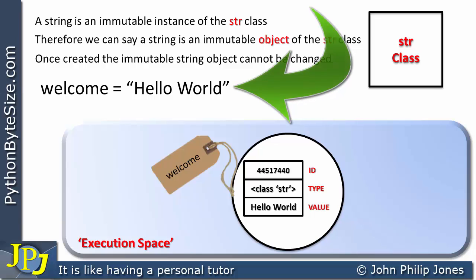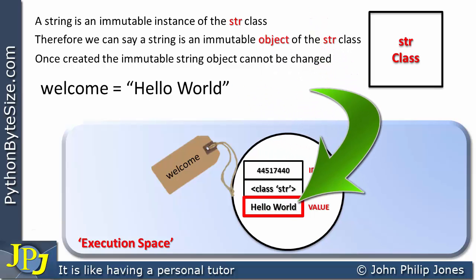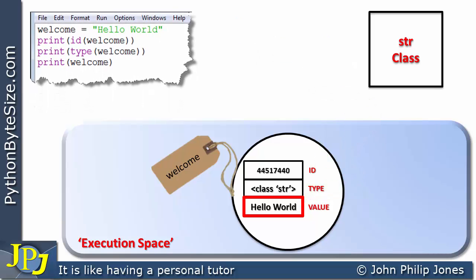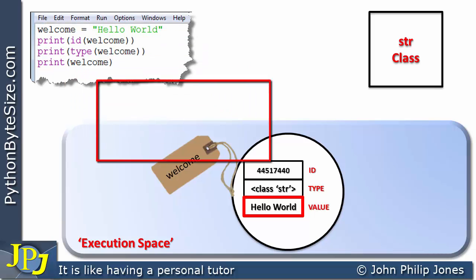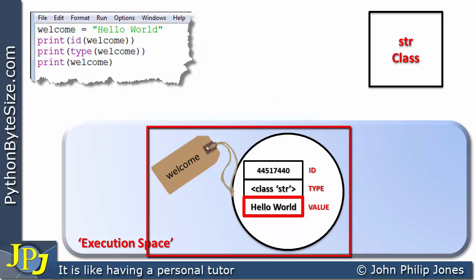So when we see this program statement — welcome is assigned 'hello world' — we need to realize that an object is created and the value will be 'hello world'. Here you can see the program: the first line, welcome is assigned 'hello world', creates this object and gives it the appropriate label.